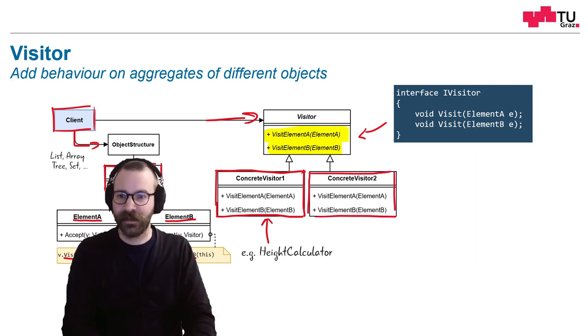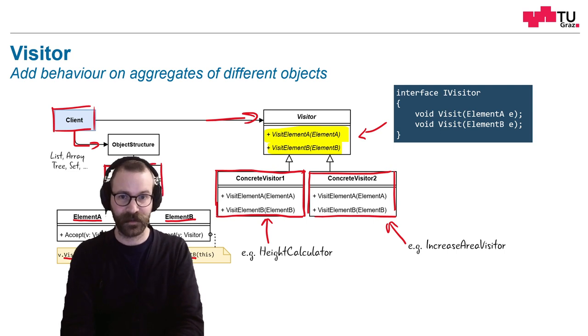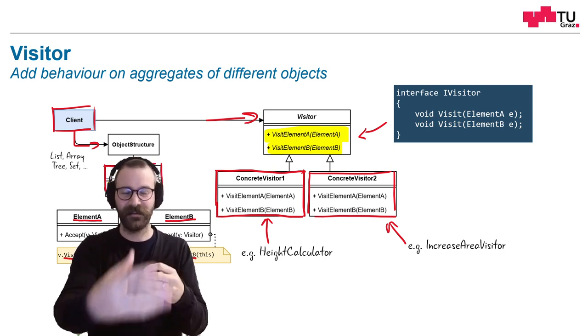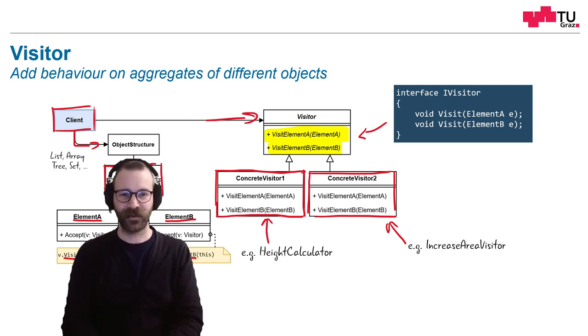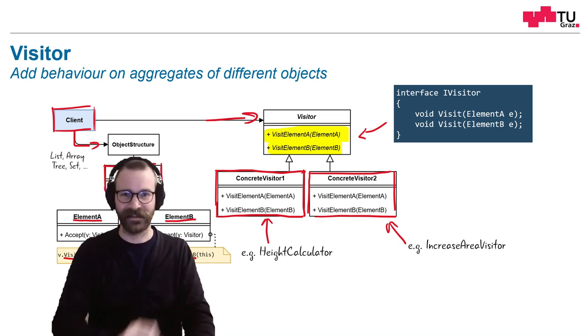Another concrete visitor could also be implemented. And here it could be, for example, an increase area visitor, which does not just use the properties from the objects, but also changes it. It needs to have some access to the properties of the objects. And maybe even to private properties, which could be a problem. But we will talk about this later on.